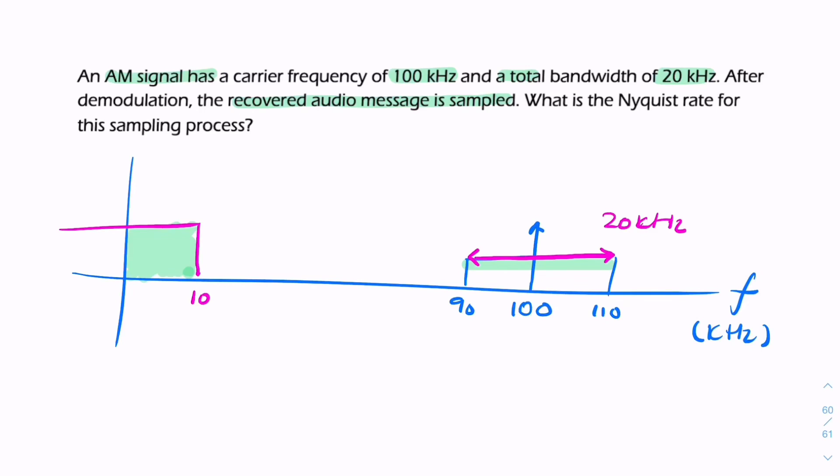It's this signal that's now sampled. This is f max. So the Nyquist rate will be twice f max.